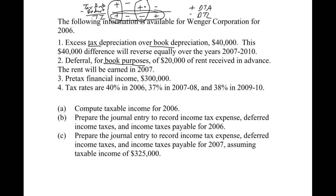We've seen these types of examples in prior videos. The wording here is a little different — 'deferral for book purposes of rent received in advance' just means we're not recognizing it on our financial statements because we haven't earned it yet; we'll earn it next year. Our financial income is 300,000 and we have changing tax rates, which we covered in the last video. So we need to compute taxable income for 2006, and the journal entry for 2006 and 2007 will follow from that.